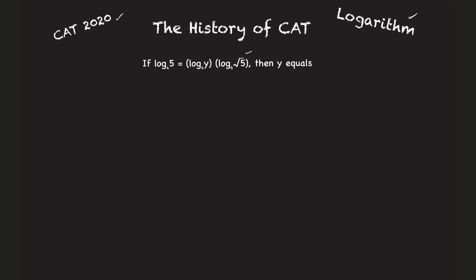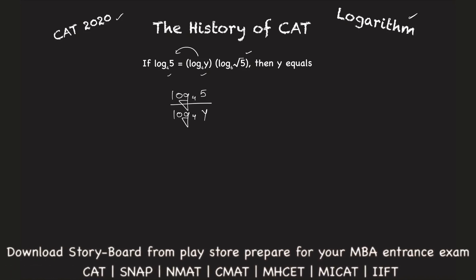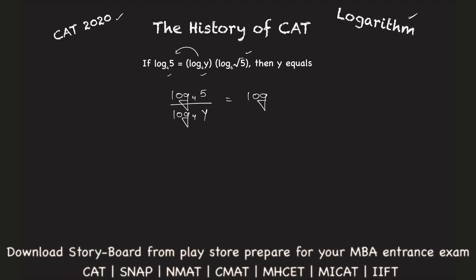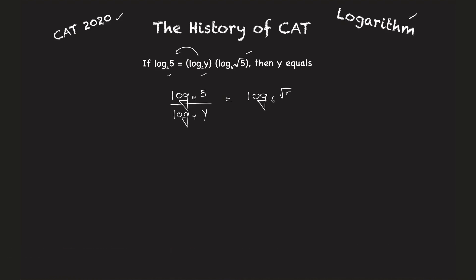I'll simplify this and reach the answer. I can see base 4 here and base 4 here. So I have log to the base 4 of 5, and I'll take log to the base 4 of y to one side. This entire thing will now be equal to log to the base 6 of square root of 5.